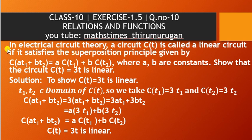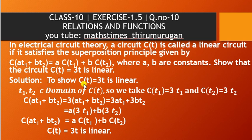We take C of t equal to C of at₁ plus bt₂. So, we have to show the circuit C of t equal to 3t is linear.